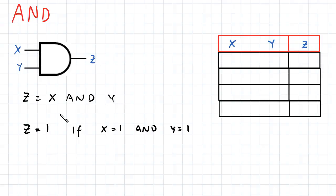Basically, what this means physically is that z is equal to 1 if x is equal to 1 and y is equal to 1.